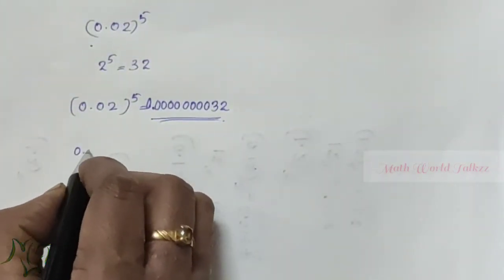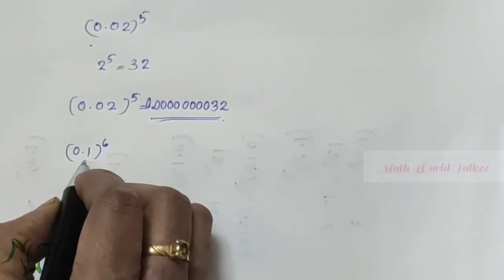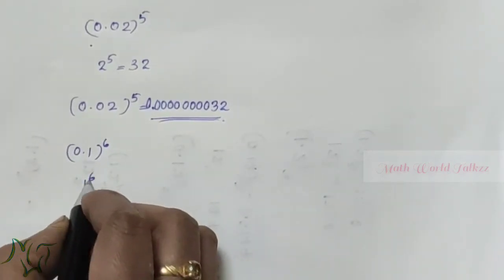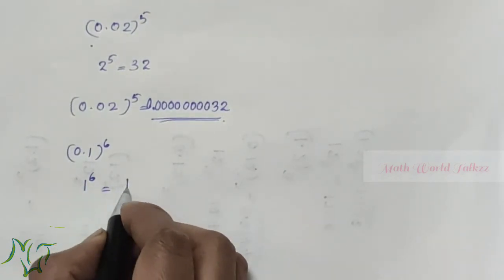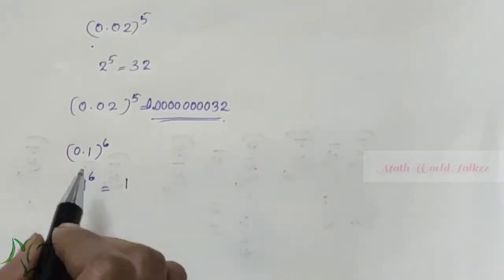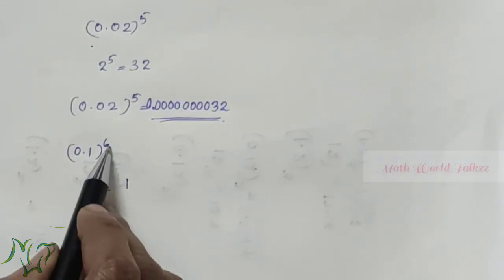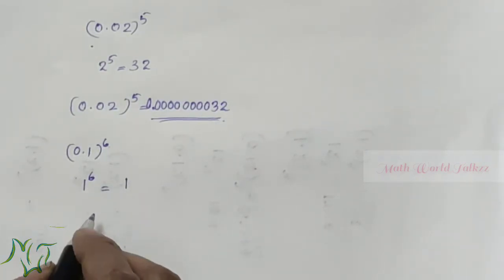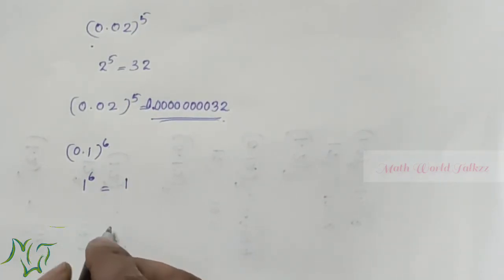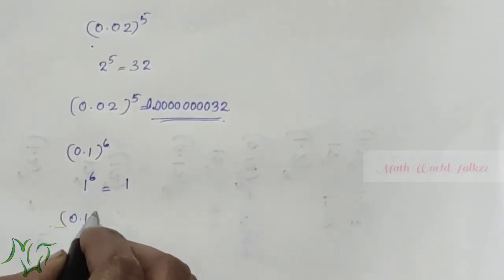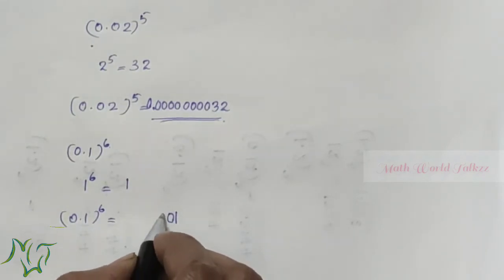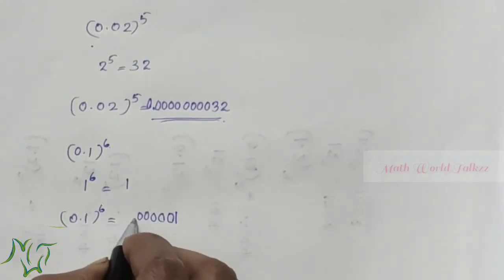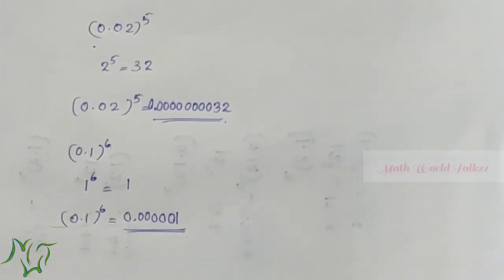Next, 0.1 whole raise to 6. Without the decimal the number is 1, and 1 raise to 6 — any power of 1 is 1 itself. Here we have 1 decimal place and the power is 6, so 1 times 6 is 6: there must be 6 decimal places in the answer. We write 1 and need 5 more zeros — one, two, three, four, five — then put the point. The answer is 0.000001.